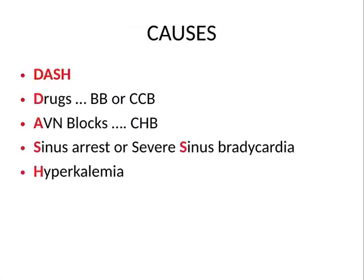The causes are anything preventing conduction from the SA node to the AV node. It can be a high-degree AV nodal block, a complete heart block, drugs like beta blockers or calcium channel blockers, or electrolyte abnormalities like hyperkalemia. We can use the mnemonic DASH to easily remember the causes of junctional escape rhythm.